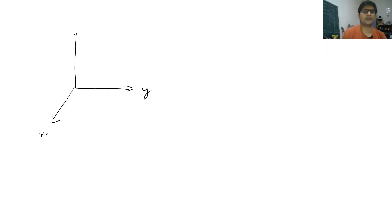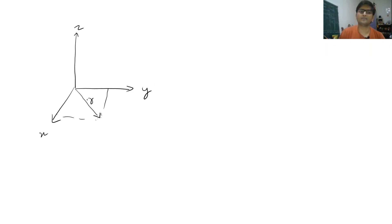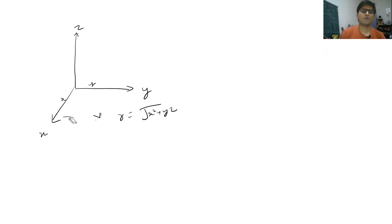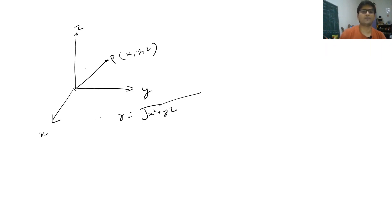In Cartesian coordinates, if a line lies in the xy-plane with projections x and y, its length r equals the square root of x² + y². In 3D, if point P has coordinates (x, y, z), then r equals the square root of x² + y² + z², where r is the magnitude of the vector. Similarly, in cylindrical coordinates with components rho, phi, and z, the same formula applies because they are also orthogonal.